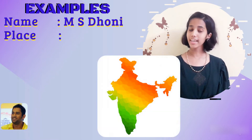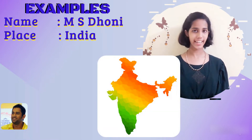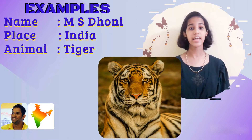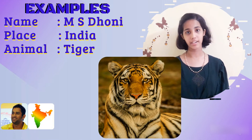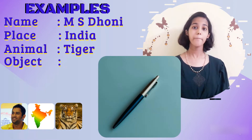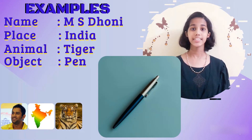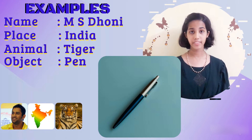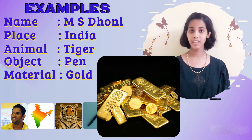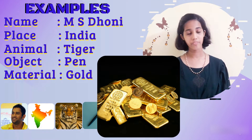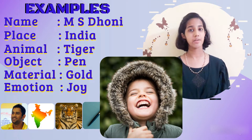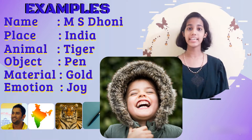India is a place, which is again a noun. Tiger is a name of an animal, so it's a noun. Pen is an object, so that's a noun. Gold is a material, so that's a noun. Joy is an emotion, so it's a noun again.